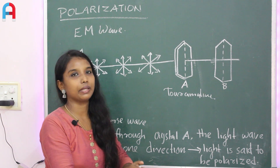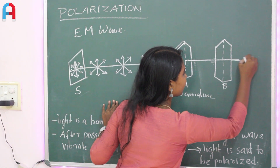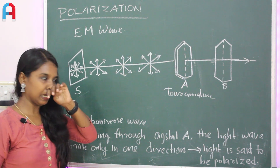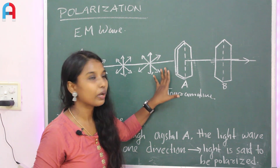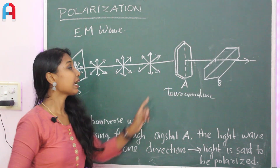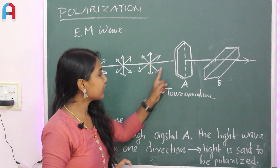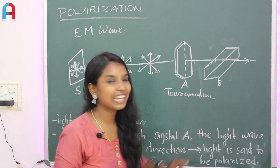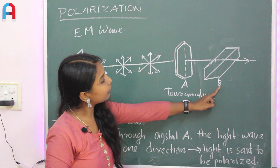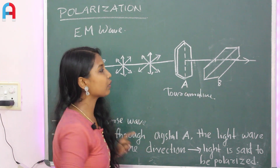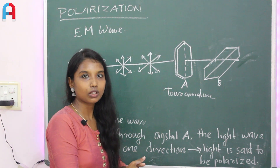We are rotating crystals A and B. If A is fixed parallel and B is rotated, the intensity of light passing through B changes. When A becomes perpendicular to B, there is no intensity of light — the light is blocked.